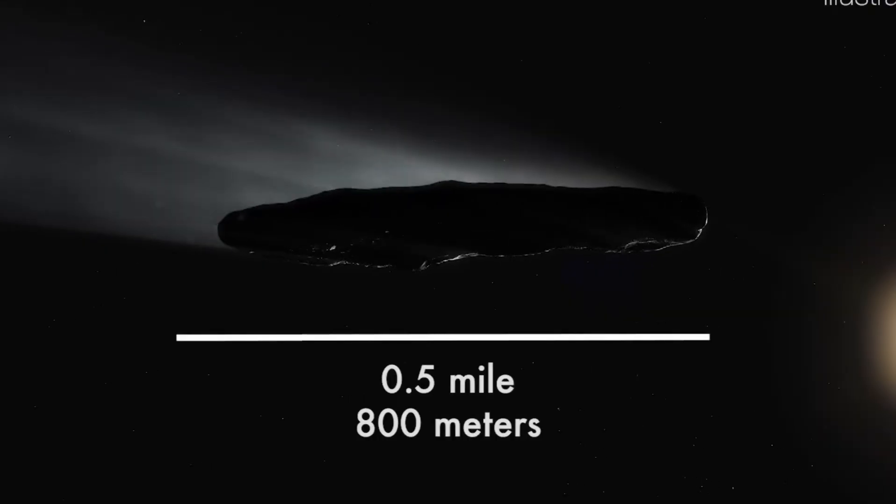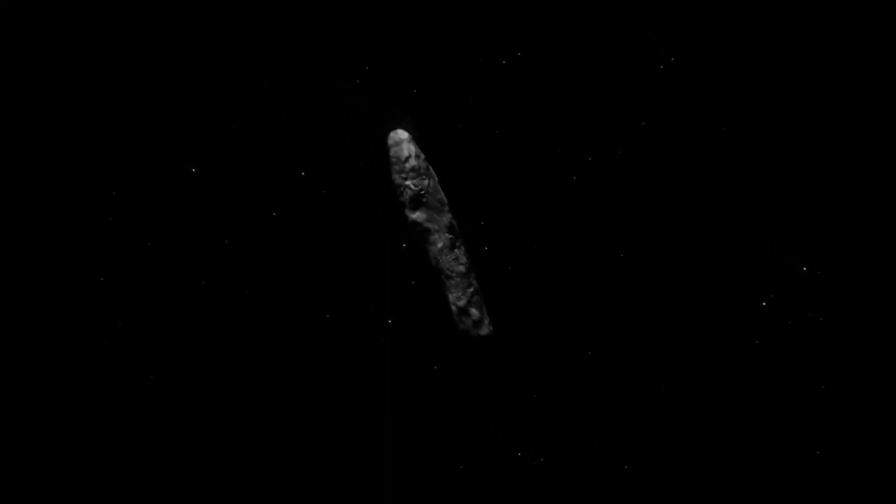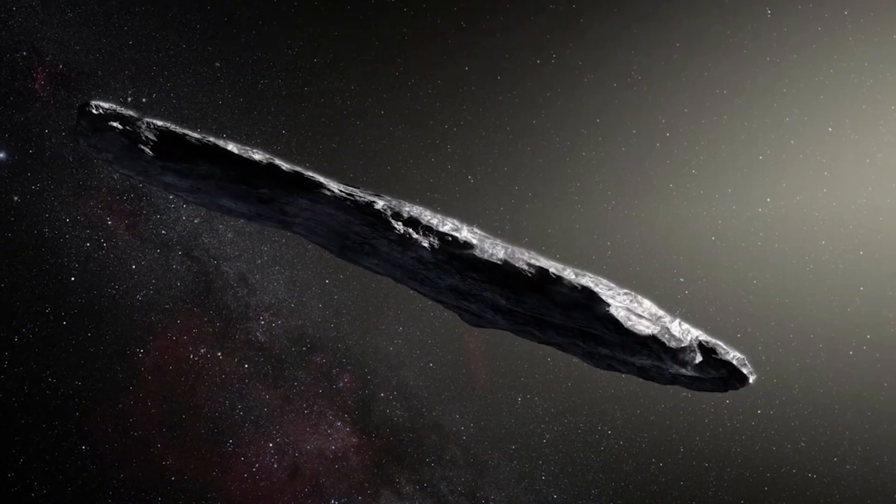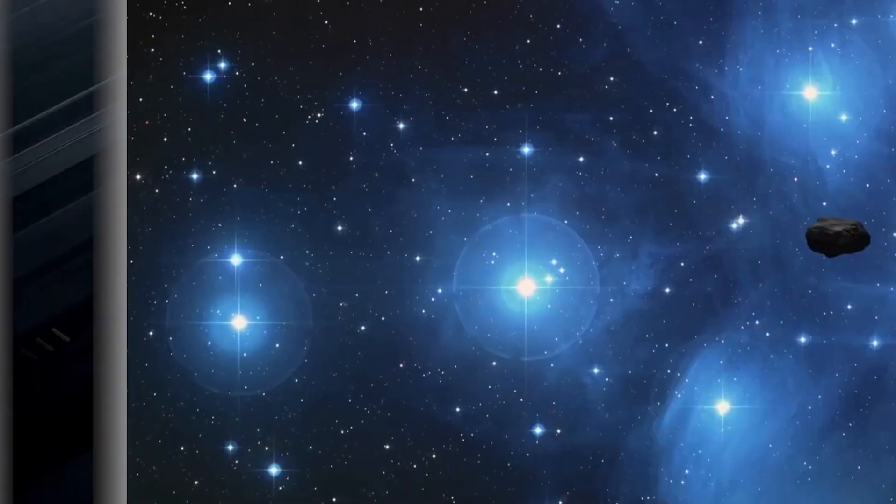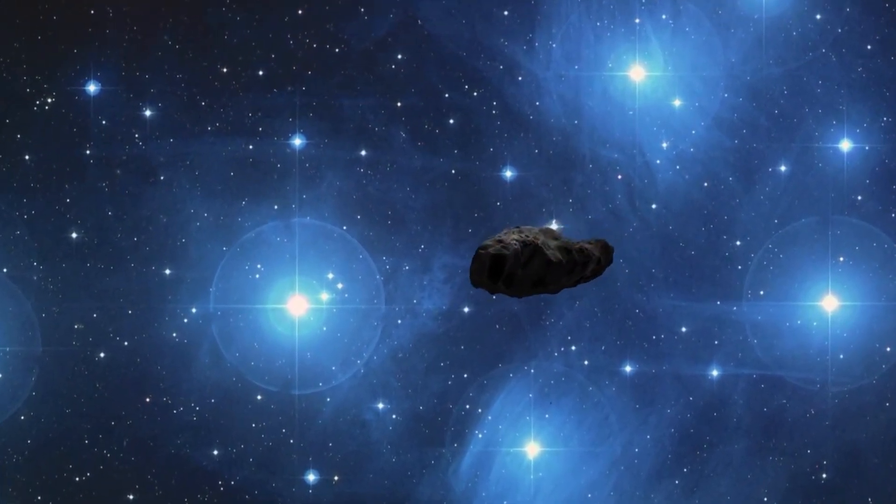Instead of familiar elliptical orbits we see in asteroids and comets, Oumuamua chose a hyperbolic path, unequivocally hinting at its otherworldly origin. The deeper our telescopes peered, the more Oumuamua eluded comprehension. That reddish tint, a hallmark of objects bombarded by cosmic rays for eons.